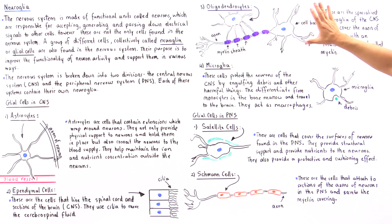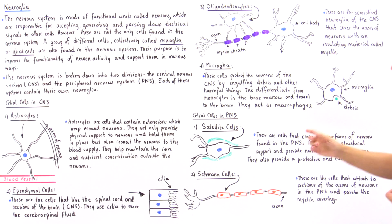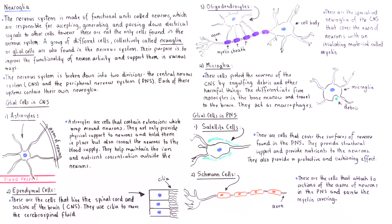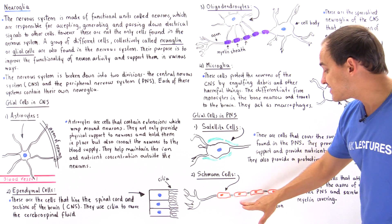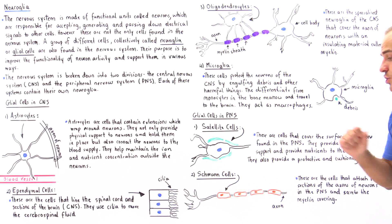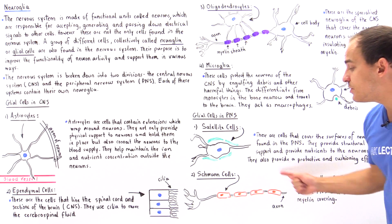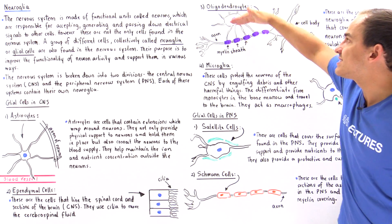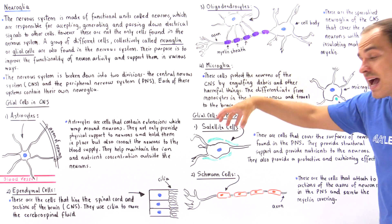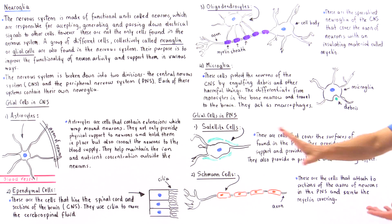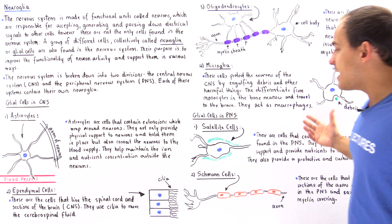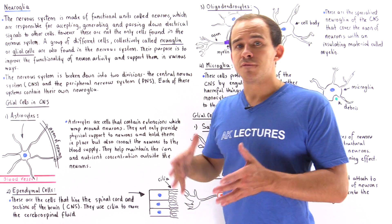Schwann cells are very similar to oligodendrocytes in that they create the myelin on neurons found in the peripheral nervous system. Schwann cells physically attach to sections on our axon and secrete that myelin material onto the axon. Notice that they differ from oligodendrocytes: the body of the oligodendrocyte is separated from the axon, while the body of the Schwann cell is actually attached onto the axon of that neuron.